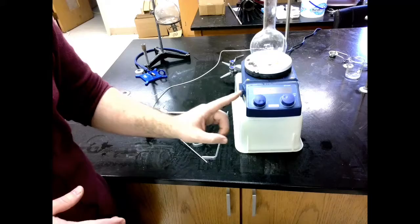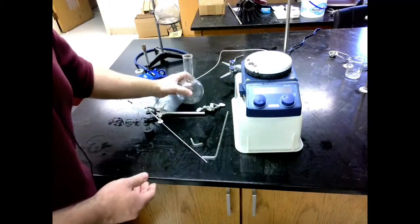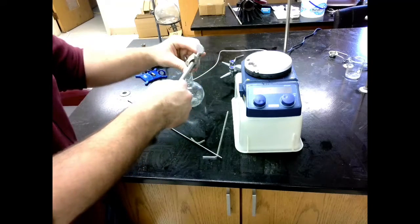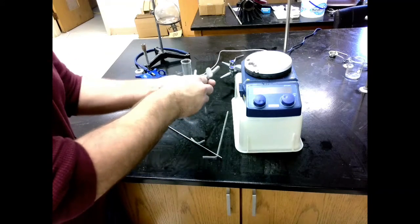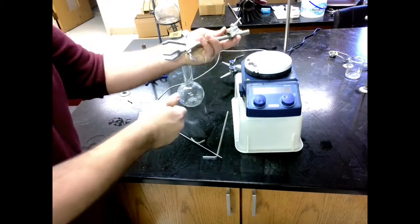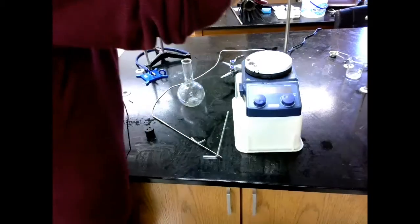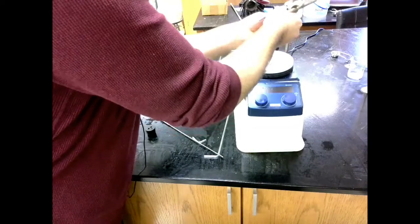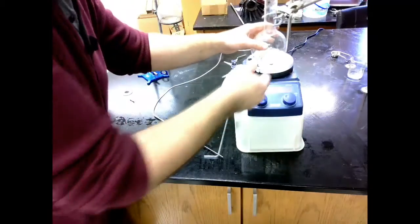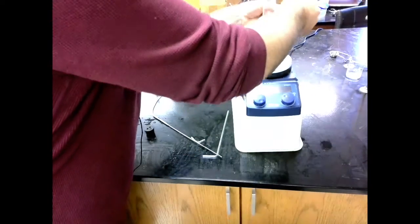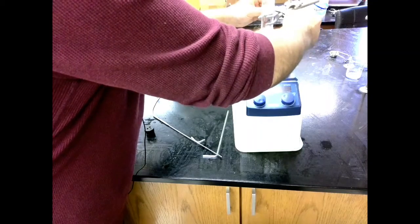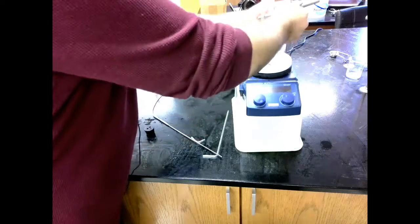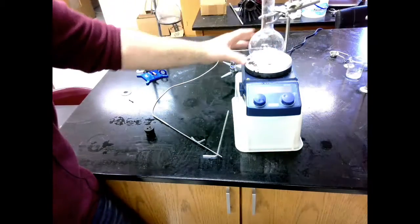So Florence flask, clamp holder, clamp. We're going to set this up first. I place this on. Clearly that's too far away. We're going to move this back in. I'm going to set my Florence flask on top of here. I'm just getting the placement of all of this ready to go. And that's a good height. That's going to hold it nice and steady on the middle of the hot plate.